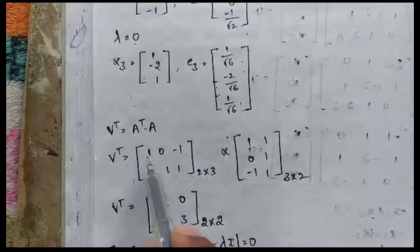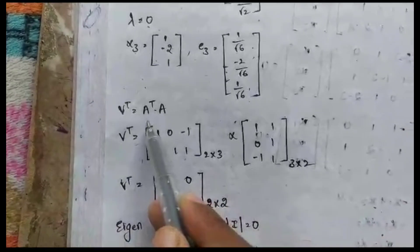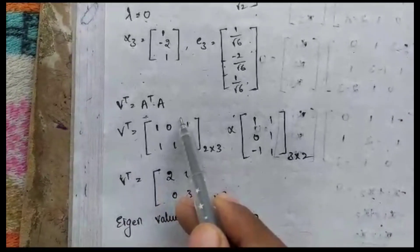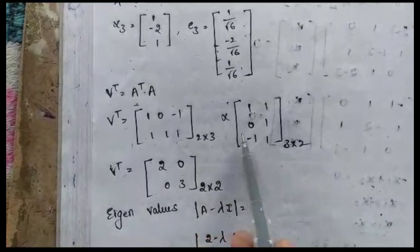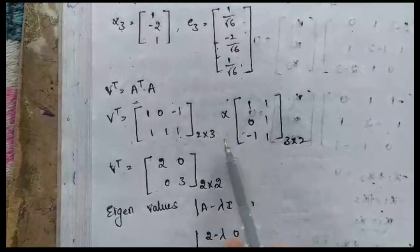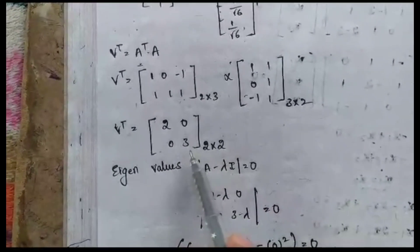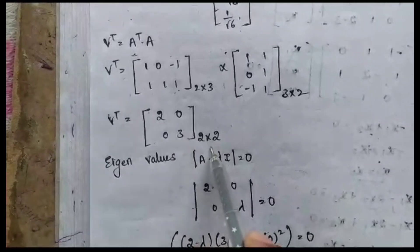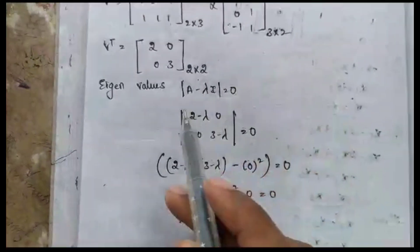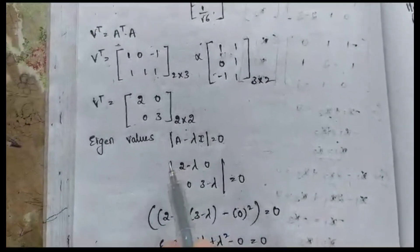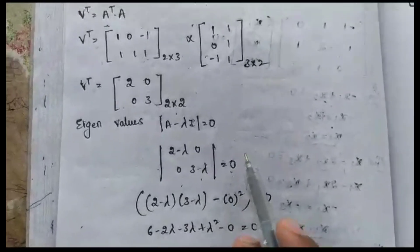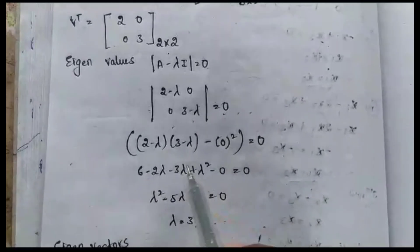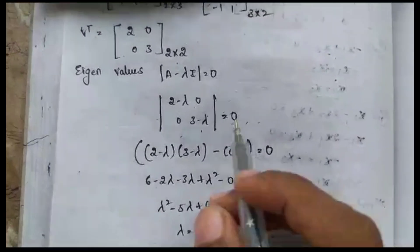Next we find Vᵀ = Aᵀ·A. We know the value of Aᵀ and A, and multiplying them we get the Vᵀ matrix in 2×2 form. We then find the eigenvalues the same way as for U.